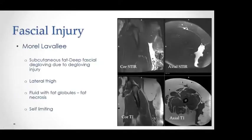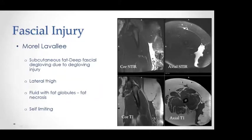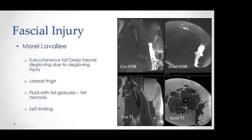Lastly, fascial injuries. The best example is the Morel-Lavallée lesion, a degloving injury between the subcutaneous fat and the deep fascia of the lateral aspect of the thigh, occurring when patients fall during motion. This results in a deep fluid-filled cavity with characteristic fat lobules representing fat necrosis due to subcutaneous fat contusion. The Morel-Lavallée lesion is self-limiting; no intervention is needed and it normally resolves on its own.